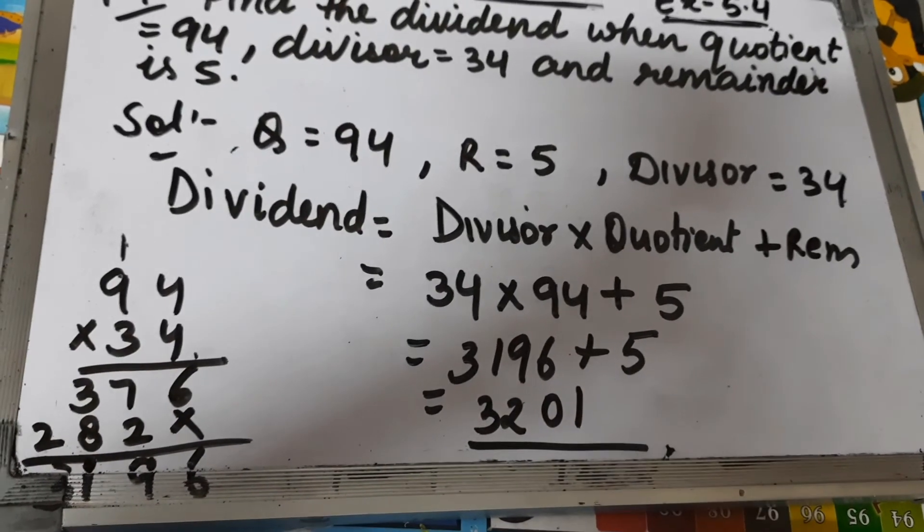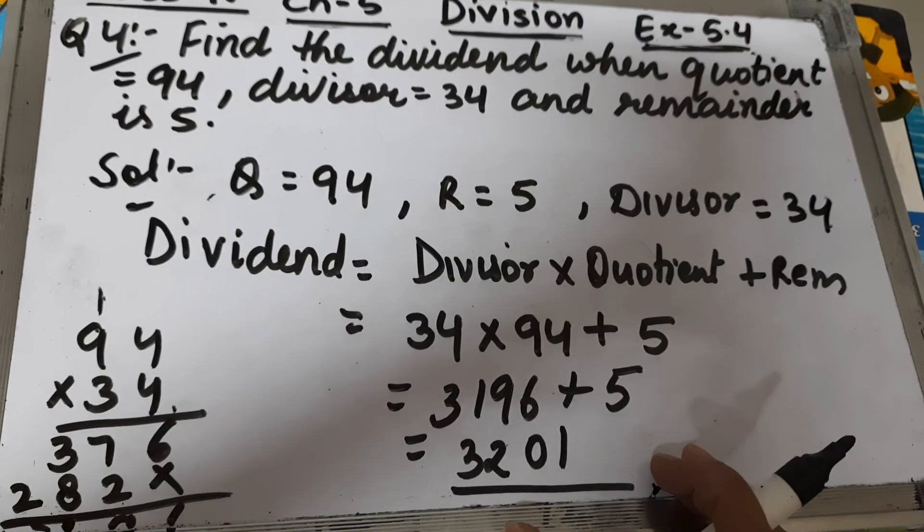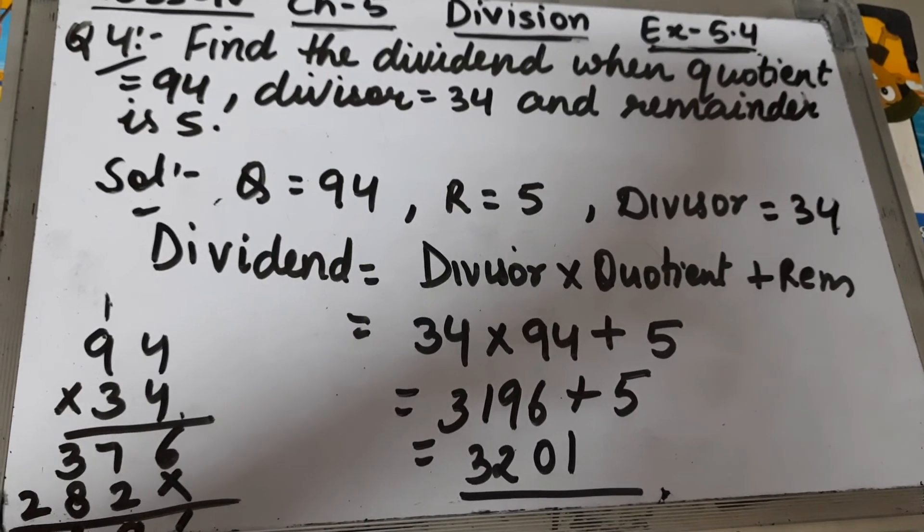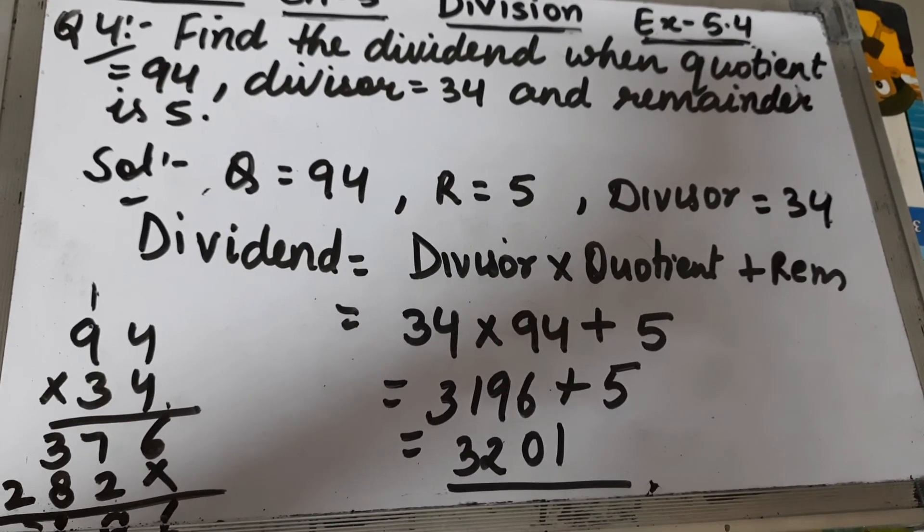This will be 3201. So what is our dividend? Our dividend is 3201. This is question number 4 of exercise 5.4.